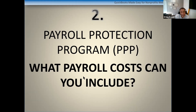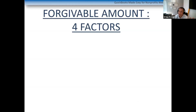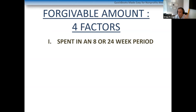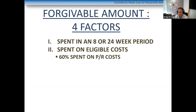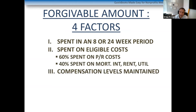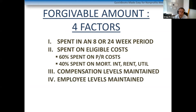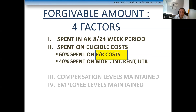Now I'm going to talk about the specifics of what costs can be included in payroll — this is really important. There are four factors. If your loan is $50,000 or under, you only need to worry about the first two: spend it in the 8 or 24-week period and spend it on eligible costs. You don't have to worry about maintaining compensation levels or employee levels.